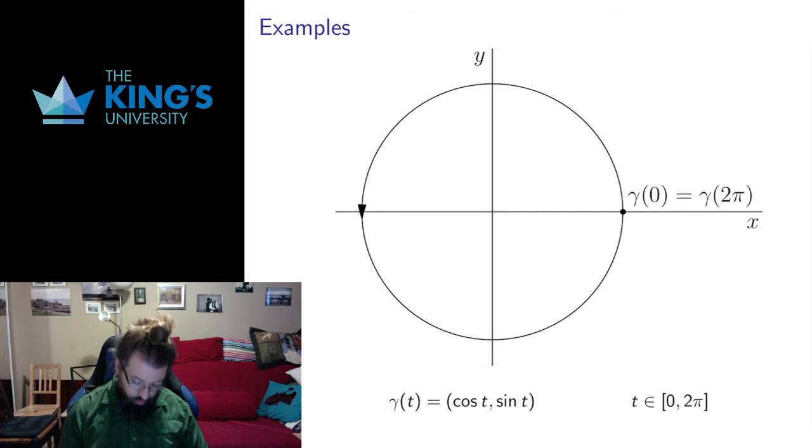So here's a very conventional example of the circle. Gamma of t is cos t, sin t, and t is in the range 0 to 2π. So what happens if t equals 0? Well, cos of 0 is 1, so the x coordinate is 1. Sin of 0 is 0, so t equals 0 gives us 1, 0 at this point.